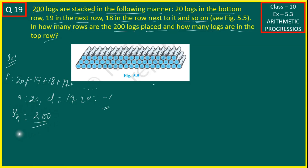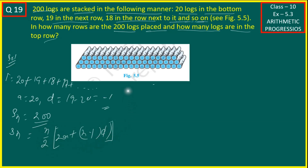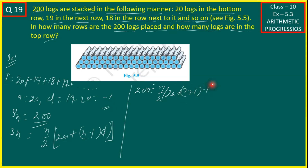So N is unknown. S_n is equal to N by 2, into (2A plus (N minus 1) into D). S_n equals 200, so: 200 = N/2 into (2A plus (N minus 1) into D), where D is equal to minus 1.